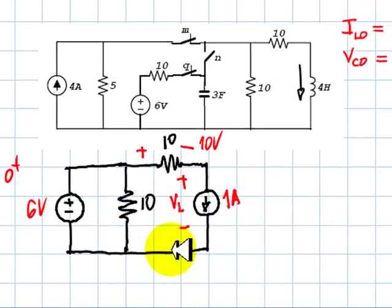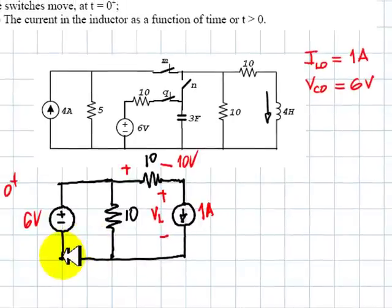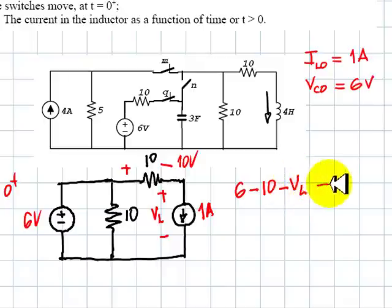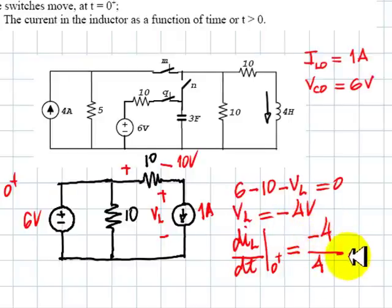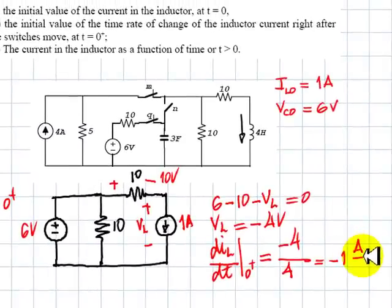So we write a KVL equation starting here, for instance, going up by 6, going down by 10, going down by VL, that is equal to 0. And VL happens to be negative 4 volts. What we're looking for is the current rate of change at 0 plus, and that is negative 4 divided by the inductance, 4 Henrys, that is negative 1 amps per second, and that is the answer to part B of this problem.